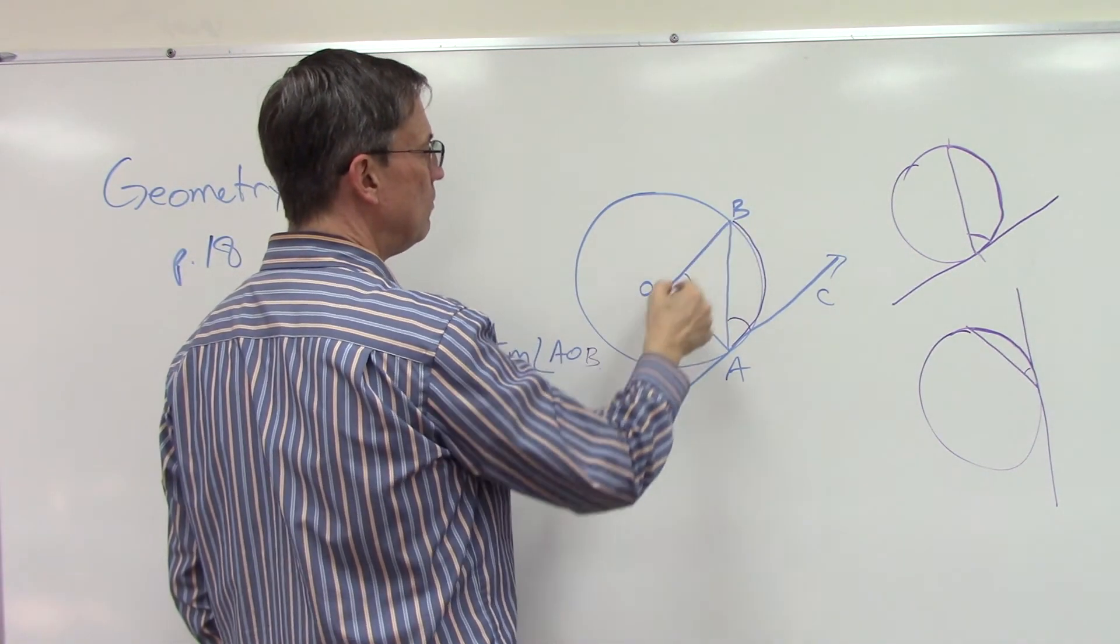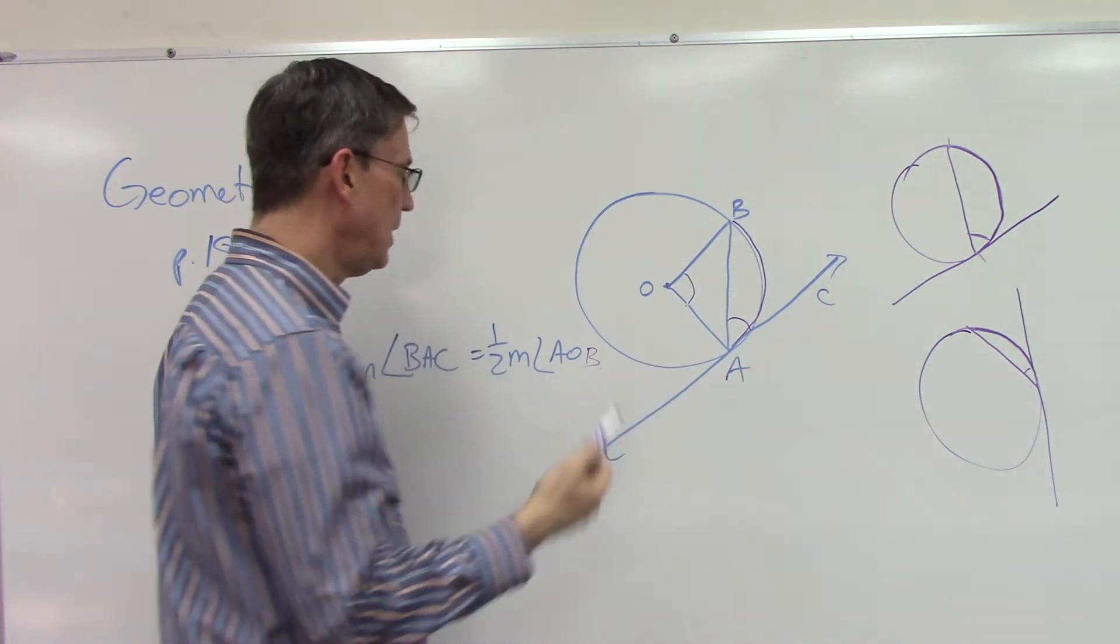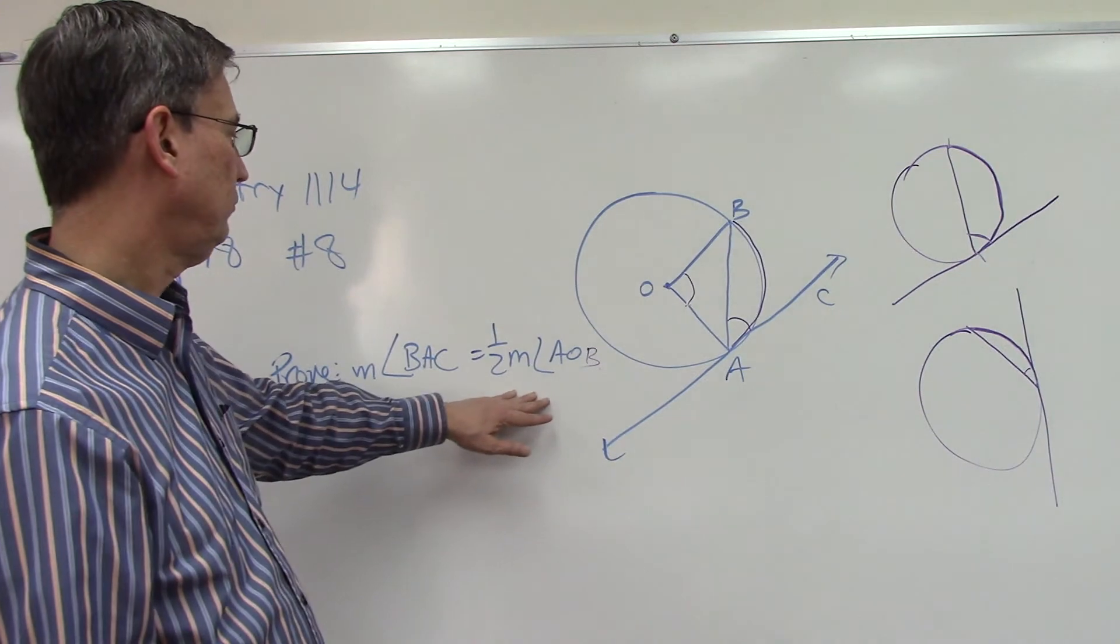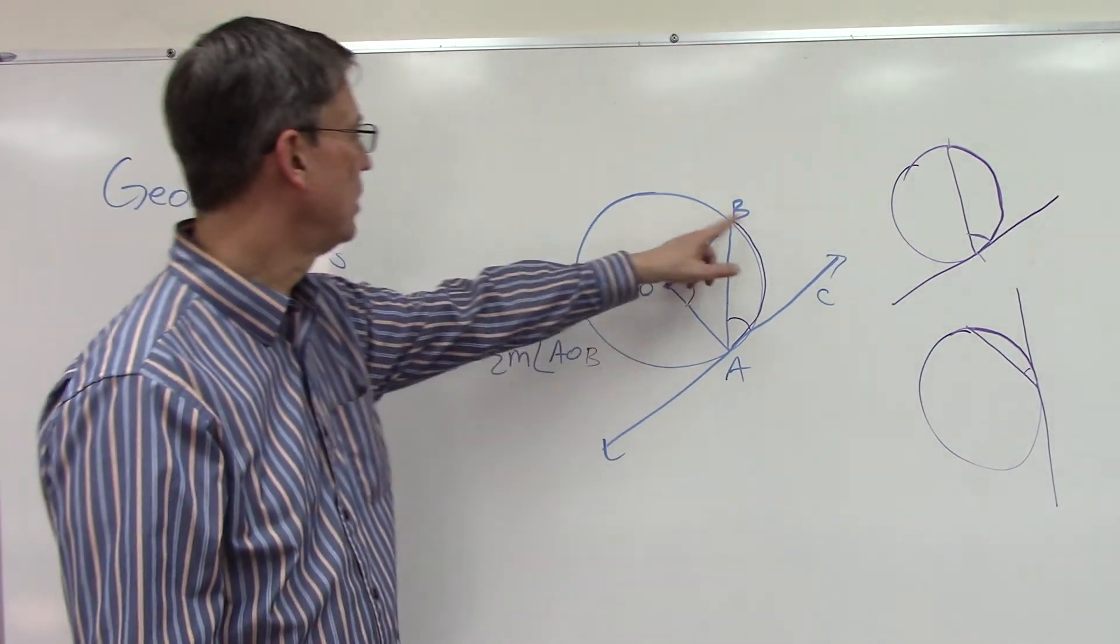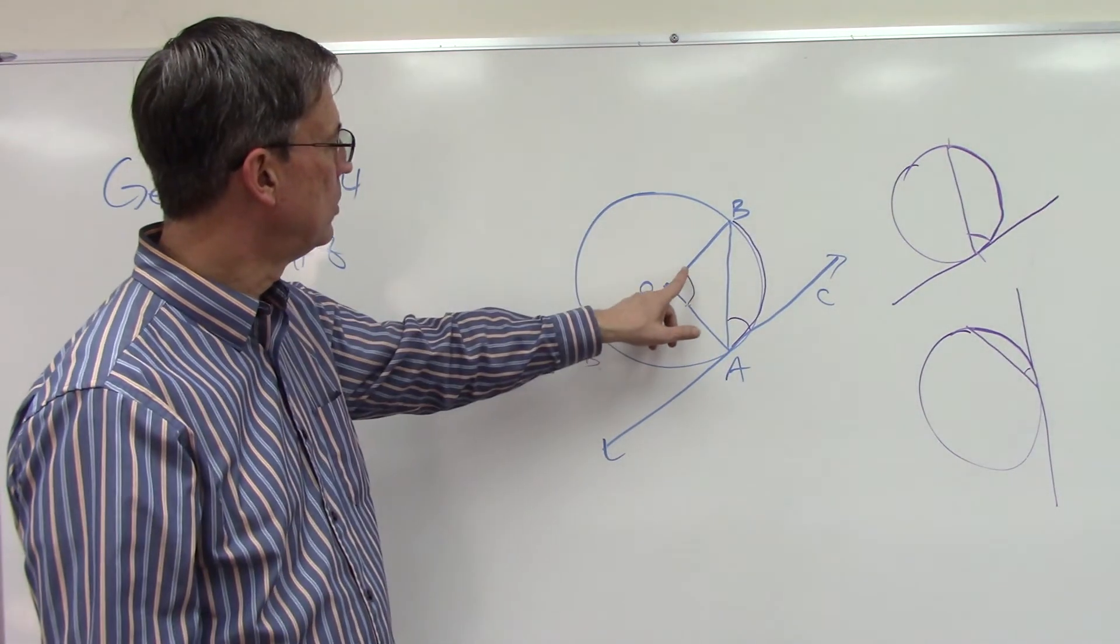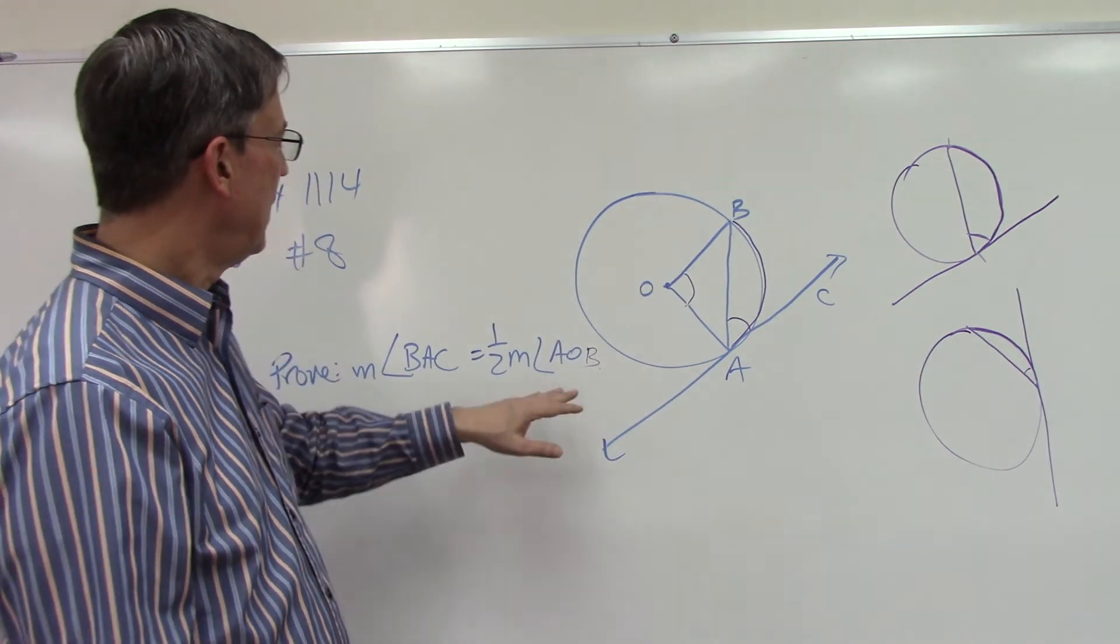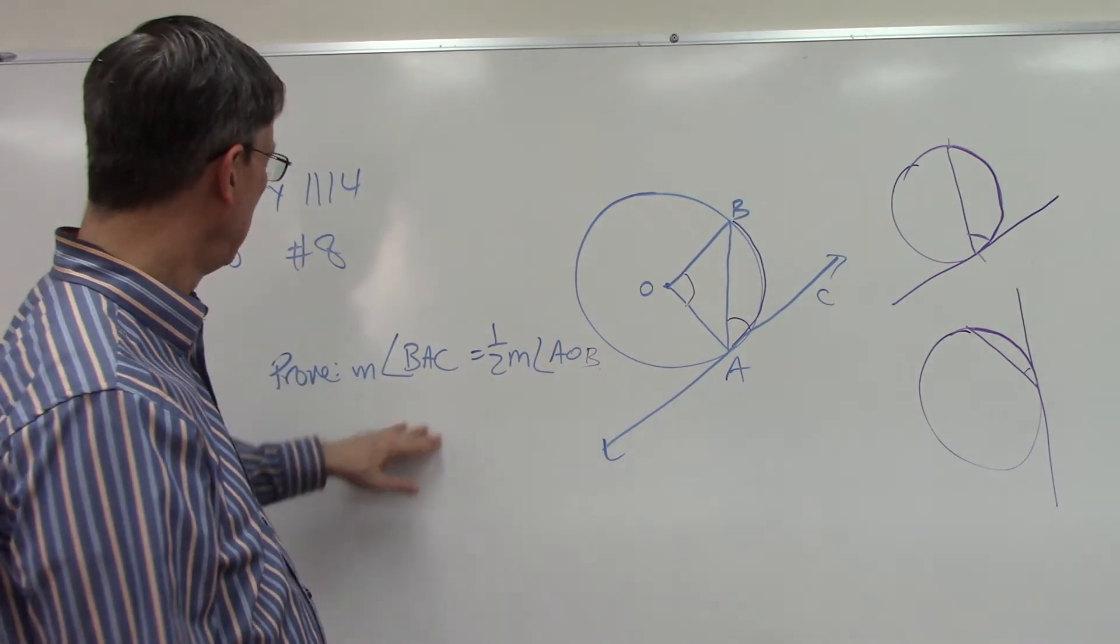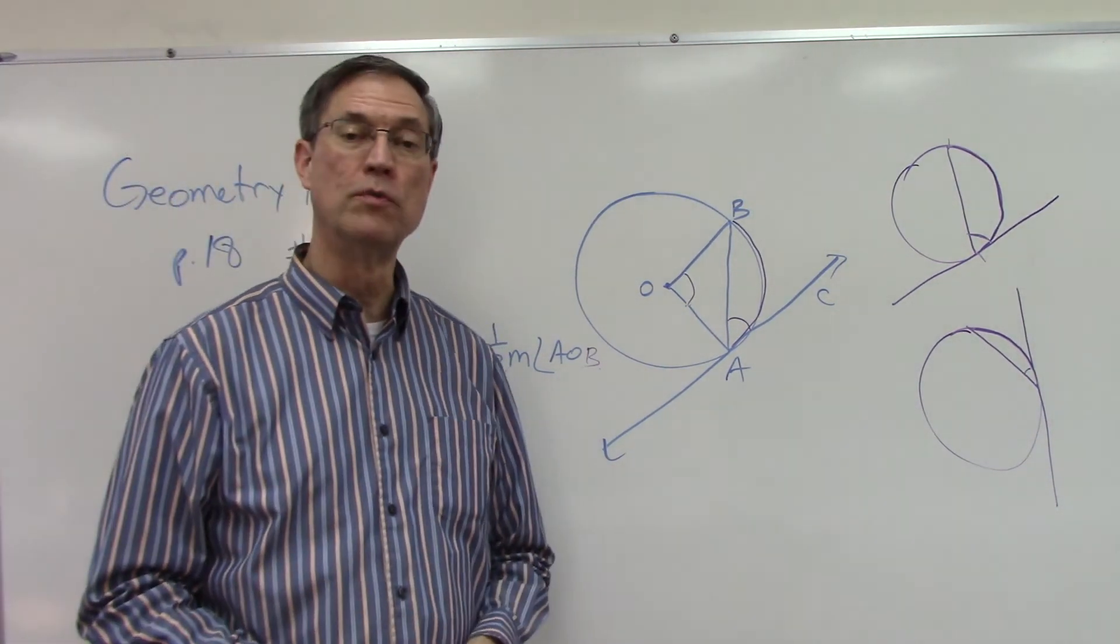So then we can make that statement, and then I think we can just do a substitution. So the measure of this arc has to be equal to the measure of the central angle, and then we can substitute into that statement and end up at our point that we're trying to prove, our conclusion.